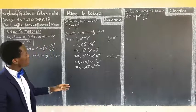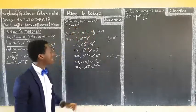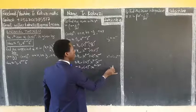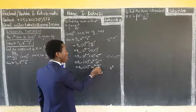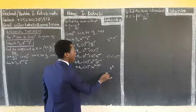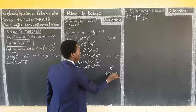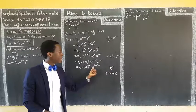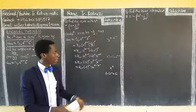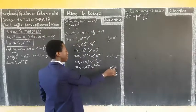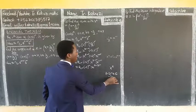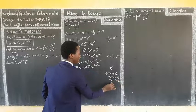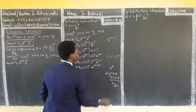Since we want the term with x^6, the overall power of x in our expression must equal 6. Setting 8 - 2r = 6 gives -2r = -2, so r = 1. Our task is always to get this r by equating the required power.